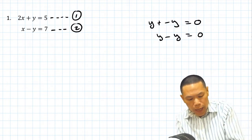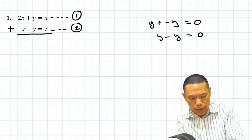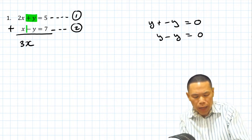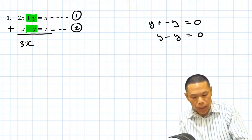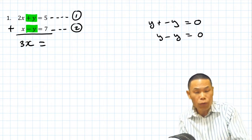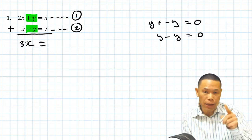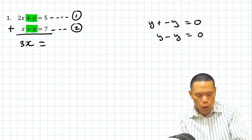So let's add them together. We go 2x plus x is 3x, and then y plus minus y disappears. On the right-hand side we have 5 plus 7, which is 12.